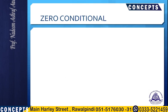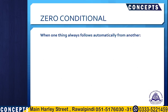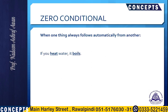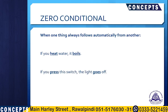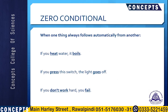Before we finish with the first conditional let us also talk about the zero conditional. The zero conditional is when we use the present form of the verb in both clauses of the sentence, and that is when one thing always follows automatically from another, or when we are talking about scientific facts or the natural results of certain actions. For example: if you heat water it boils — that is the natural consequence of heating water. If you press this switch the light goes off — that is the obvious consequence of pressing that switch. And: if you don't work hard you fail — that is the obvious consequence of not working hard, because anybody who doesn't work hard must fail. So this was the zero conditional, which is a slight variation of the first conditional.